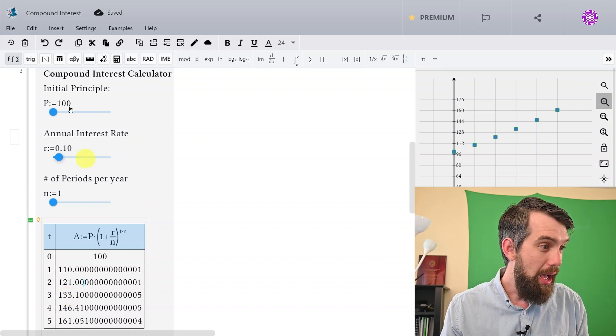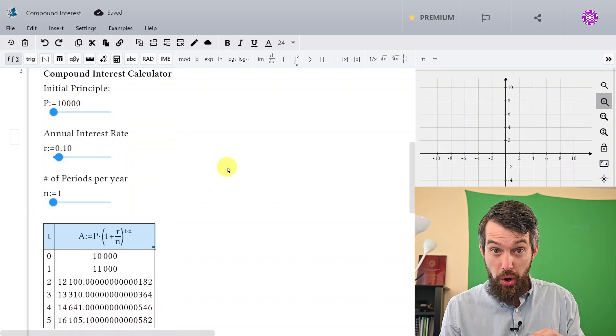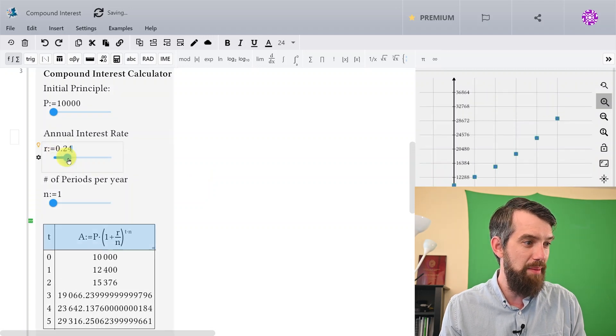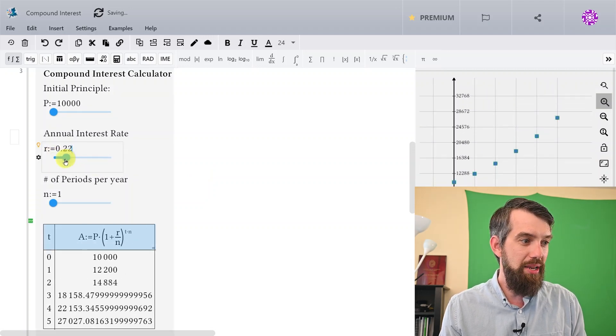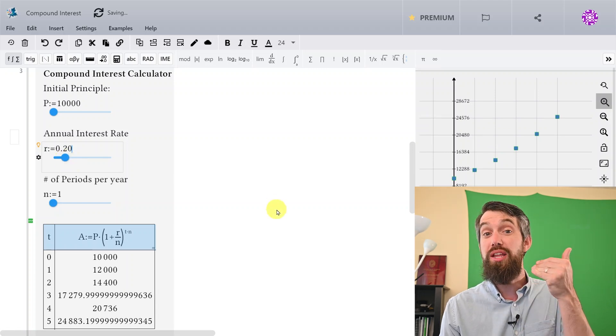So for example, imagine, I hope this won't be the case, but imagine that you had 10 thousand dollars on a credit card. And credit cards typically have large interest rates, so let's slide the slider up to something, well that's a little bit too much. But it's not uncommon to have, for example, 18, 19, 20 percent on a credit card.